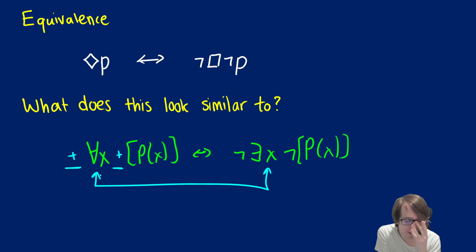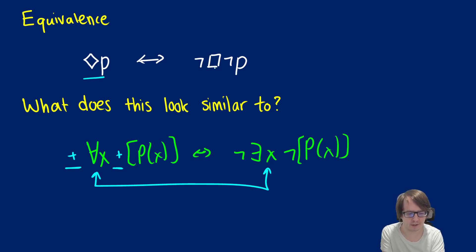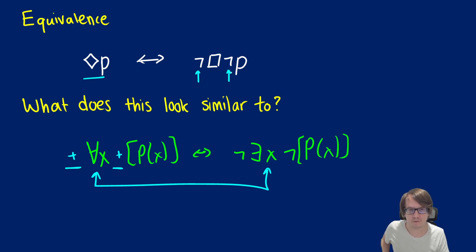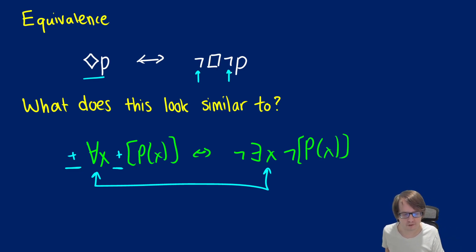This is exactly the same thing happening with diamond P and box P. Diamond P, or possibly P, is equivalent to not necessarily not P, or not box not P. We're adding a negation for each of the operators and the propositional formula, and we're changing the box to the diamond — the stronger to the weaker, the weaker to the stronger.